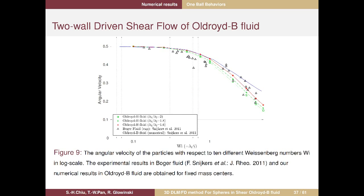We look for the best ratio parameter lambda-1/lambda-2. The experimental result from Snijkers' paper in Boger fluid (triangles) shows that as lambda-1/lambda-2 equals 1.6, we can fit the experimental result. This confirms our method is suitable — the angular velocity is not far from the experimental or other numerical results.